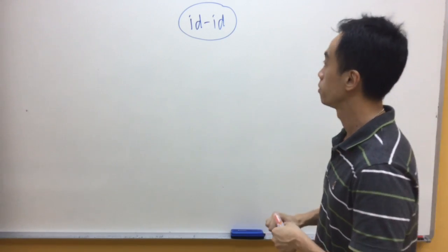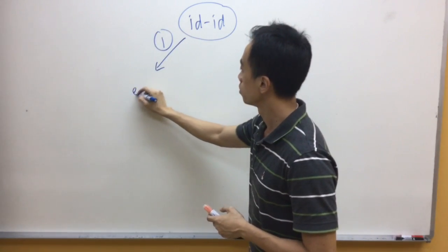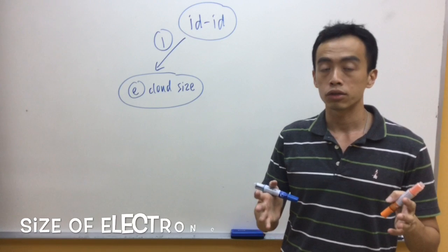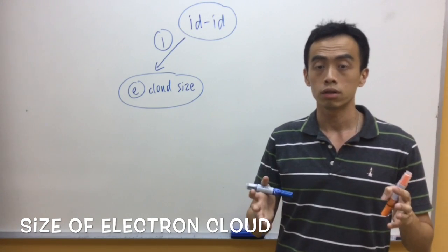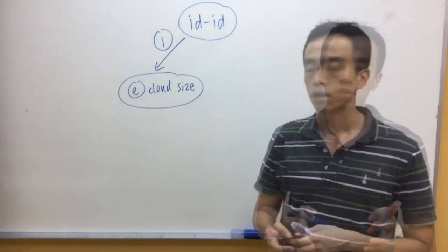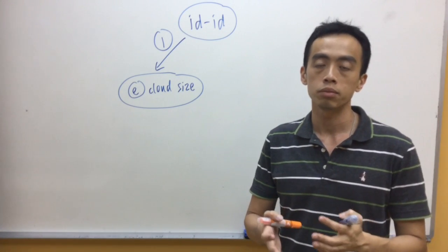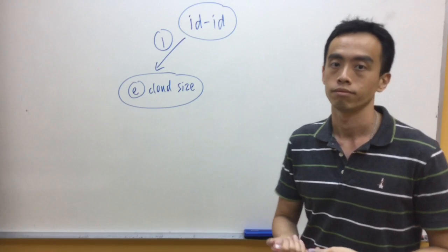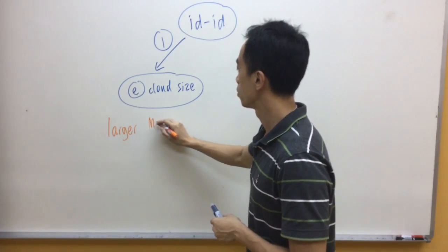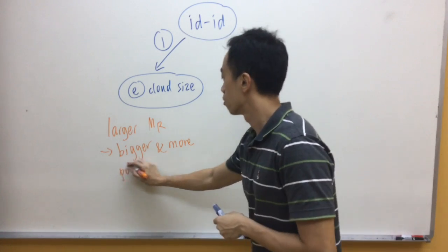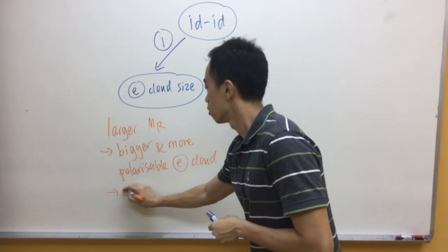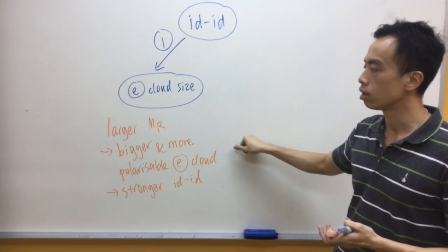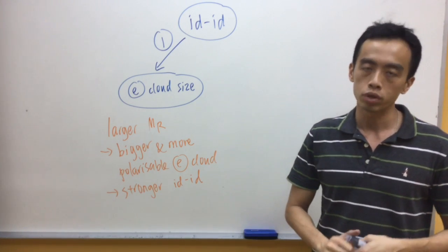In general, there are two factors. The first factor is our electron cloud size. If the electron cloud size is larger, it will be more polarizable and the ID-ID will be stronger. We'll use MR, or the molecular mass, to indirectly determine the size of the electron cloud. In general, the larger or the higher the MR, the bigger the electron cloud size. So when you have a larger MR, you have a bigger and more polarizable electron cloud, and therefore your ID-ID between molecules will be stronger.